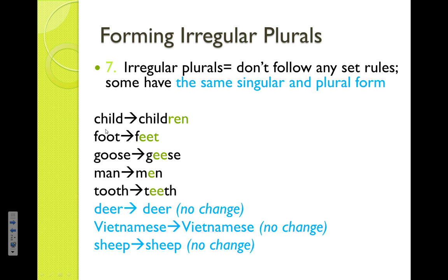Some classic examples: the word child becomes children. There's no real rule governing that — it just does what it does. The same applies for foot becomes feet, goose becomes geese, man becomes men, and tooth becomes teeth. Most of you, by virtue of being alive and reading things over the course of your lifetime, have learned to instantly recognize when something doesn't look right. For example, if you saw the word gooses on a paper, most of you would recognize that doesn't quite look right, and you might double check it before sending your communication.